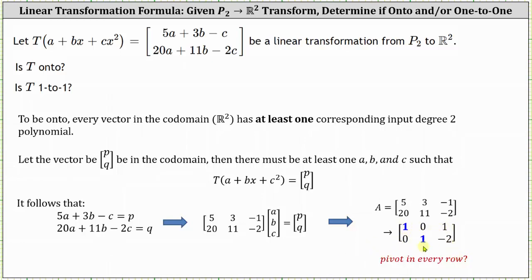This indicates every vector in the codomain R2 has at least one corresponding input degree 2 polynomial. So we answer yes for onto, and now let's check for 1 to 1.